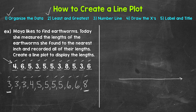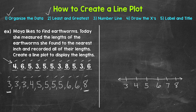Now we need to make our number line. We need to go from three to eight, making sure we include all of our data. Let's start with a line, and we're going from three to eight, so we have six numbers: three, four, five, six, seven, eight. Although we don't have any earthworms that were seven inches, we do need to include it on our number line since we are counting up from three to eight by one. Those numbers represent inches, and we'll label that at the end.